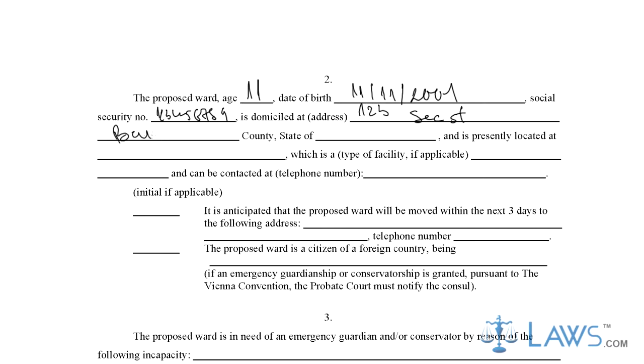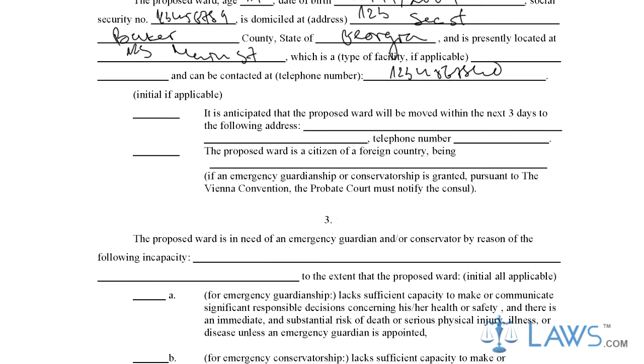Step 3. In the second subsection of Part 2, initial all sections that are applicable. Then write facts that support your claims on the lines provided below.